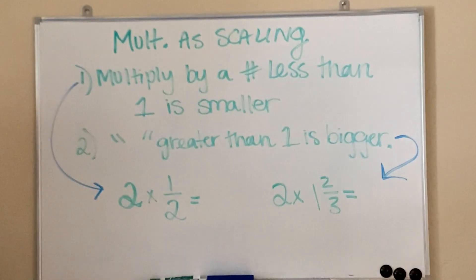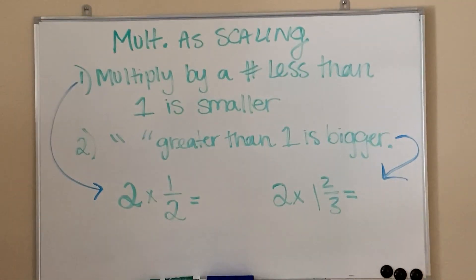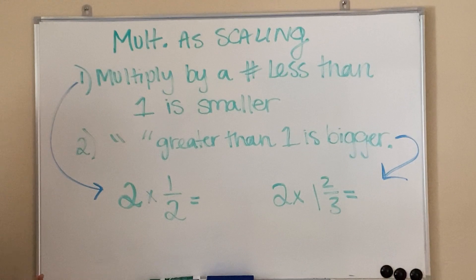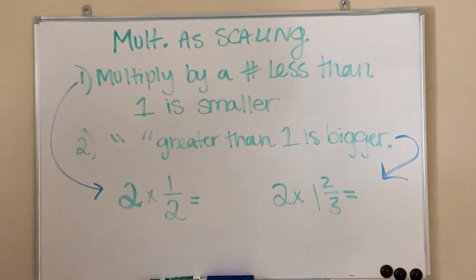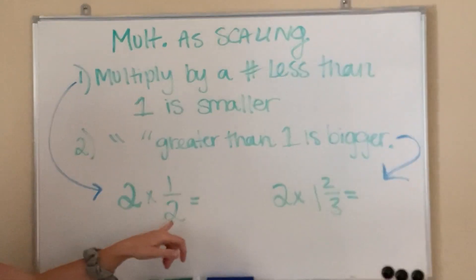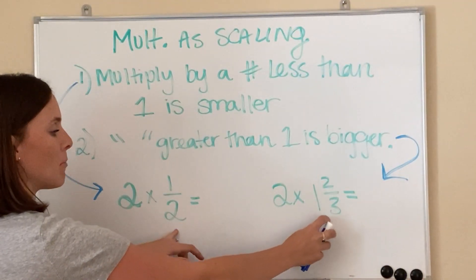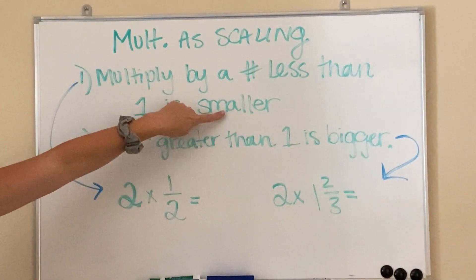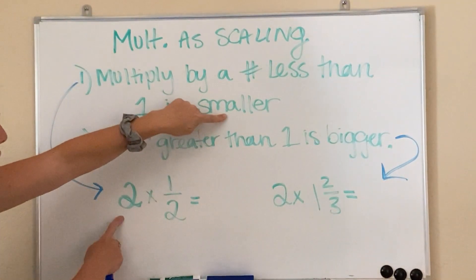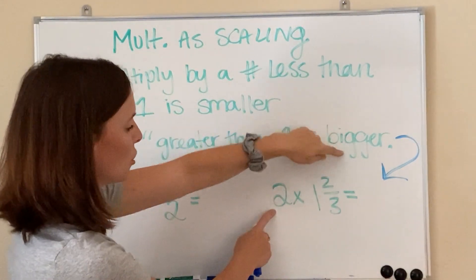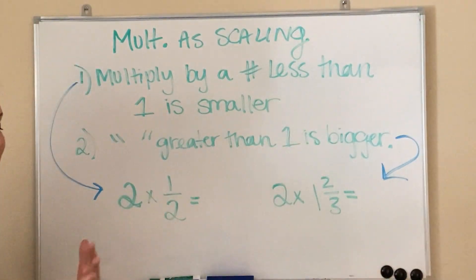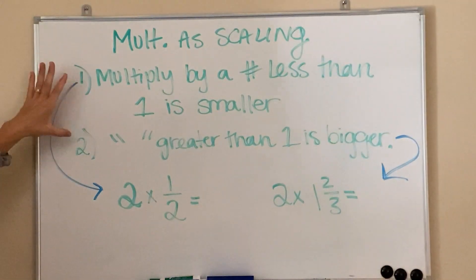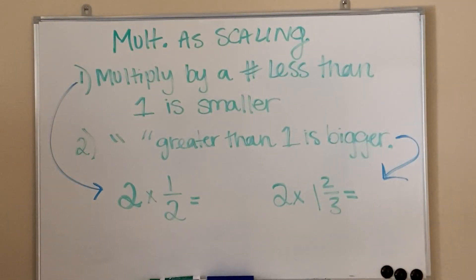In today's lesson, it's going to ask you to do this without even multiplying. They're just going to ask you to look at what you're multiplying by and decide if the answer will be smaller than two or bigger than two — predicting the answer by following these two rules. So here we go.